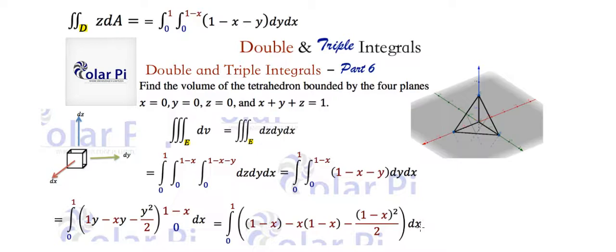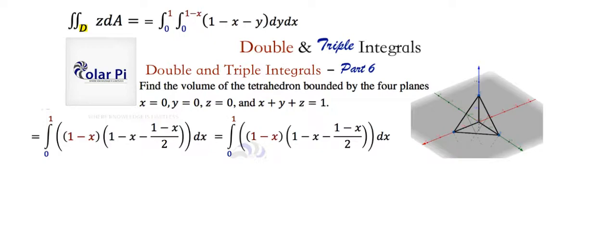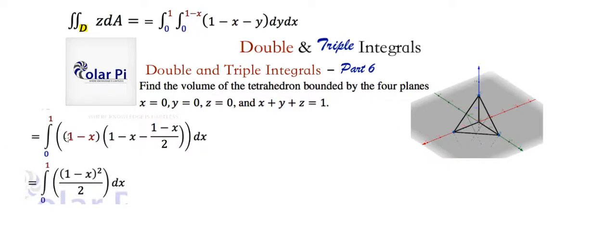Now we just have to integrate with respect to x, but we have a bit of algebra to do. You could do the algebra in a few clever ways. The first is to factor out 1 minus x from all three terms. It doesn't matter how you choose to do your algebra, you can get to the same place. We'll do a bit more simplifying: 1 minus x times this quantity reduces to just this here.